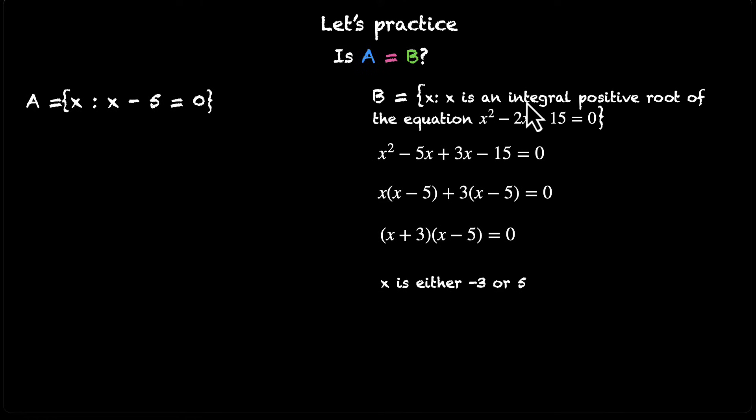But hold on. We're also given that it's integral positive root. So we only need to take the positive values. So we'll skip this -3. And we'll pick this 5. Because we only take the positive one, x is 5. And the set B only contains this element {5}. The set A also contains only one element which is {5}. Now we can see that both the sets are in fact equal.